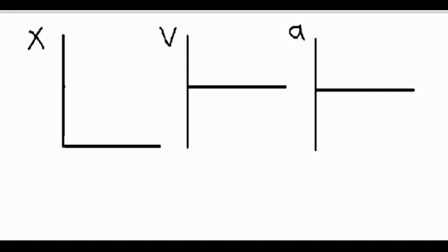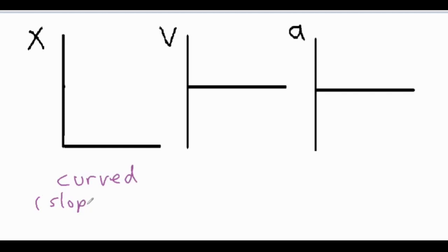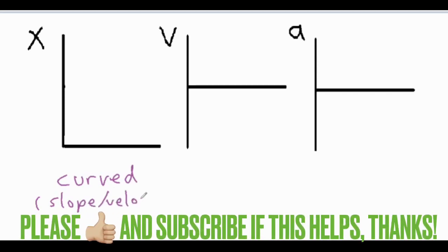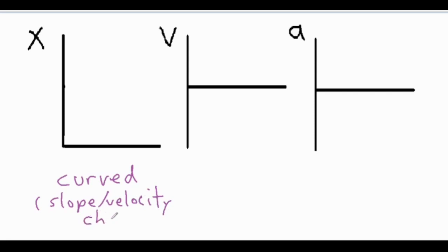Uniform accelerated motion means that the acceleration remains constant. For the position versus time graph, because the rate that it's moving continually changes, the line is going to be curved, which shows you that the slope or velocity is changing.